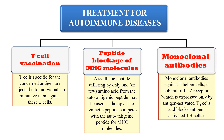The third strategy is the use of monoclonal antibodies. Monoclonal antibodies are specific against a single antigen. Here, monoclonal antibodies specific against self-reactive T helper cells can be used. Monoclonal antibodies against IL-2 receptors on antigen-activated T helper cells can also be used to block those cells. This prevents the autoimmune disorder. These are the therapies available for the treatment of autoimmune diseases.